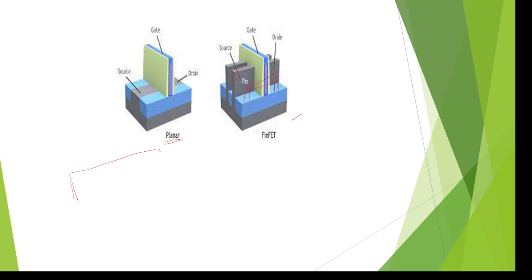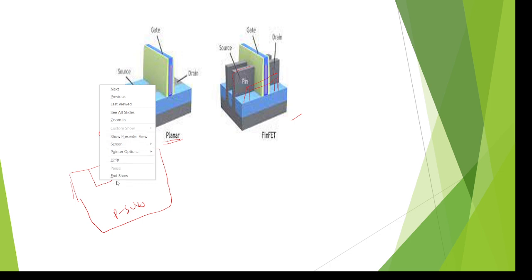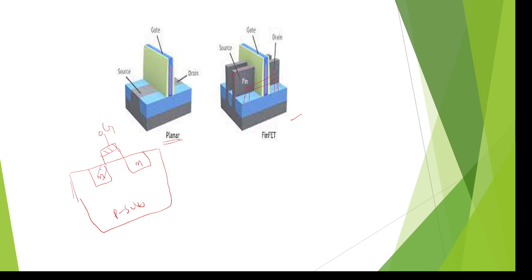In a general MOSFET, we take a piece of substrate and to design the gate terminal, we deposit polysilicon material and it acts as a gate. We are inserting electrons in a planar fashion to design the N-type material — an N-channel shape. So we insert electrons in a planar structure. But coming to FinFET, it is like a fin shape.